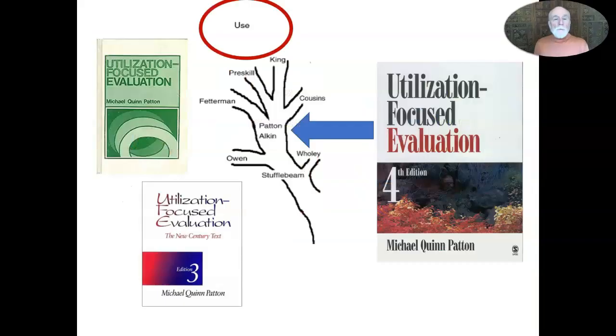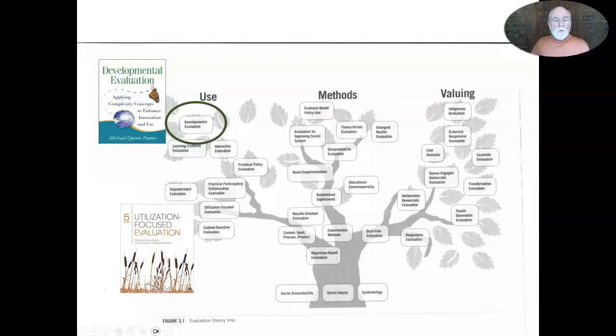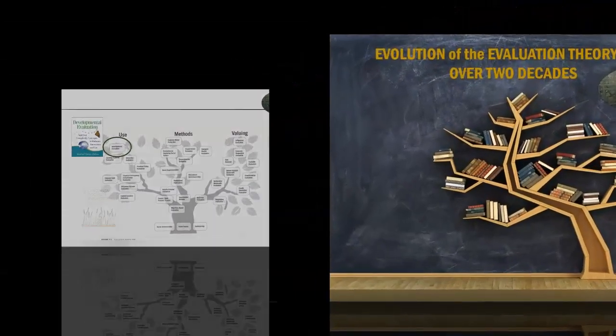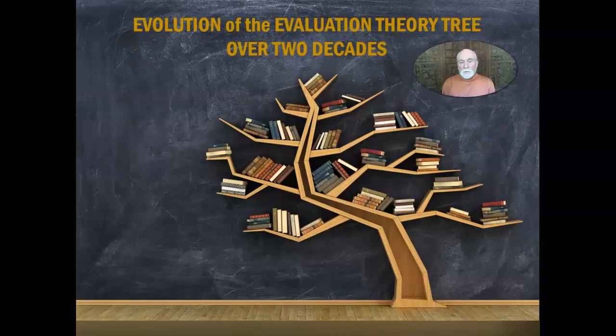For my part, I have been honored to be on the evaluation theory tree from the first edition under the use branch and in the latest edition the only theorist to have two spots on the tree: both utilization-focused evaluation and now developmental evaluation. As an old, white, straight, and clearly very privileged male, I come to these reflections with a deep sense of how limited my own perspective is and how much I've benefited from the ways our profession has developed. I offer these reflections as part of a dialogue toward a profession that more effectively contributes to a more equitable and sustainable world.